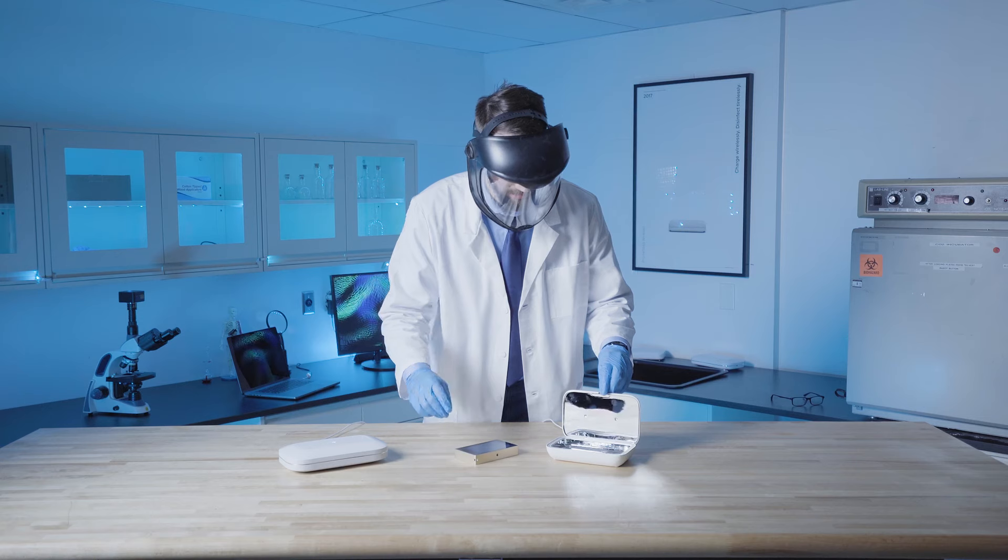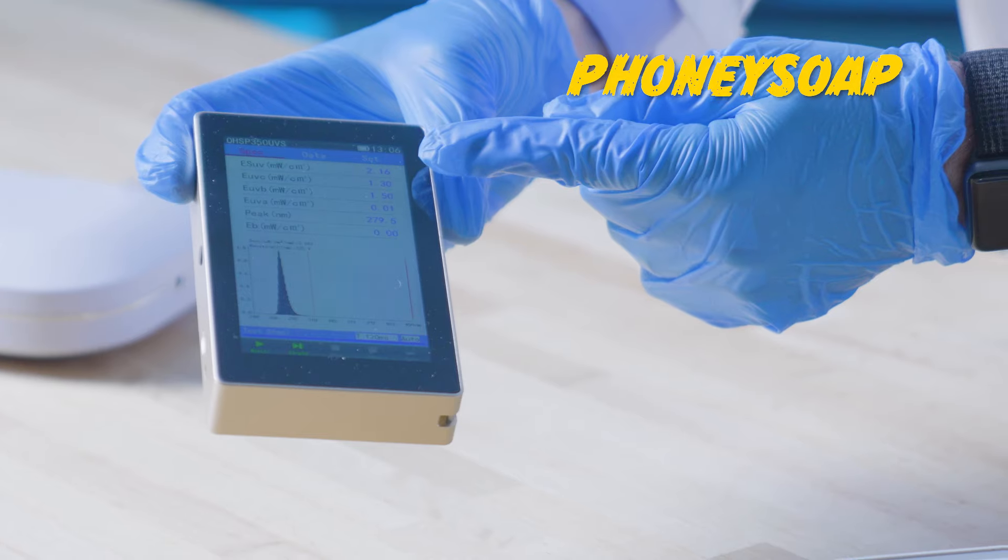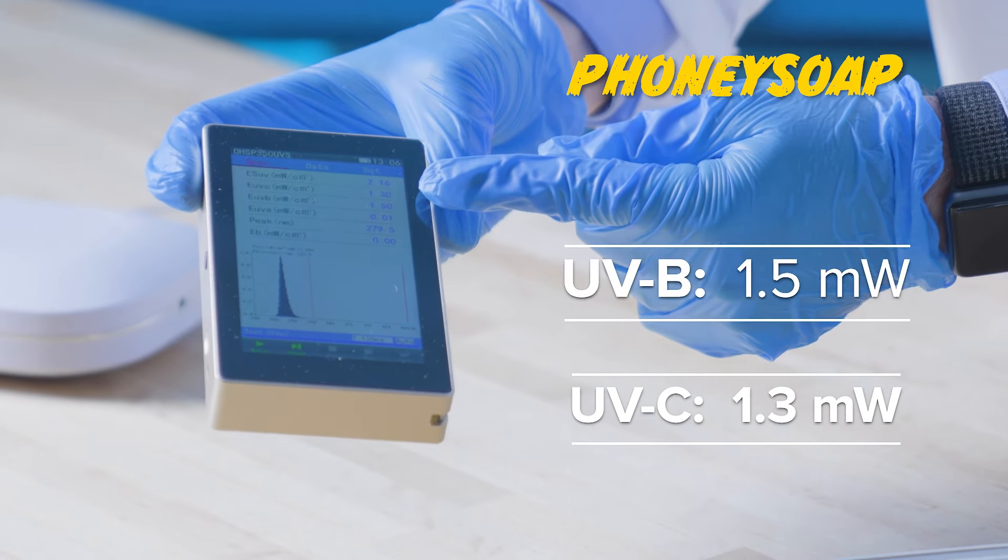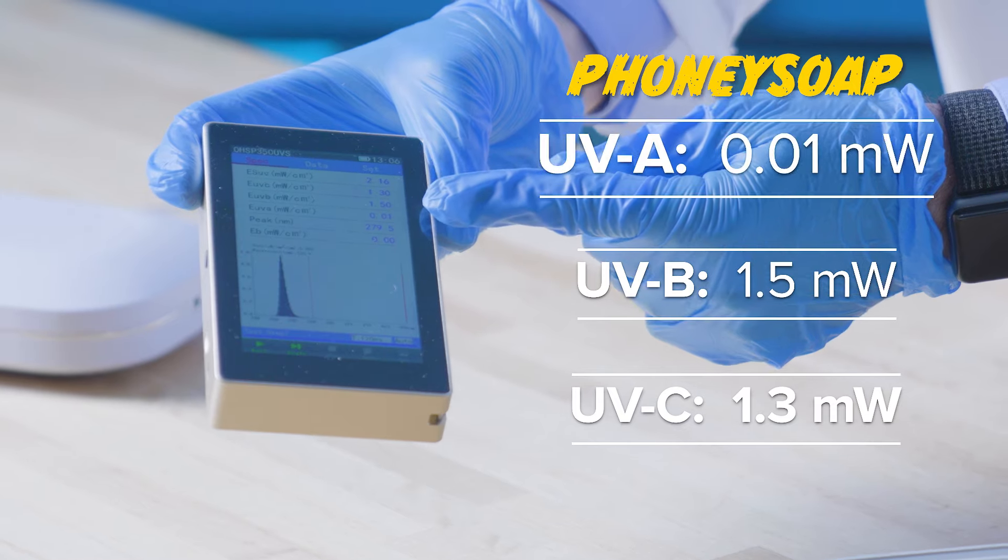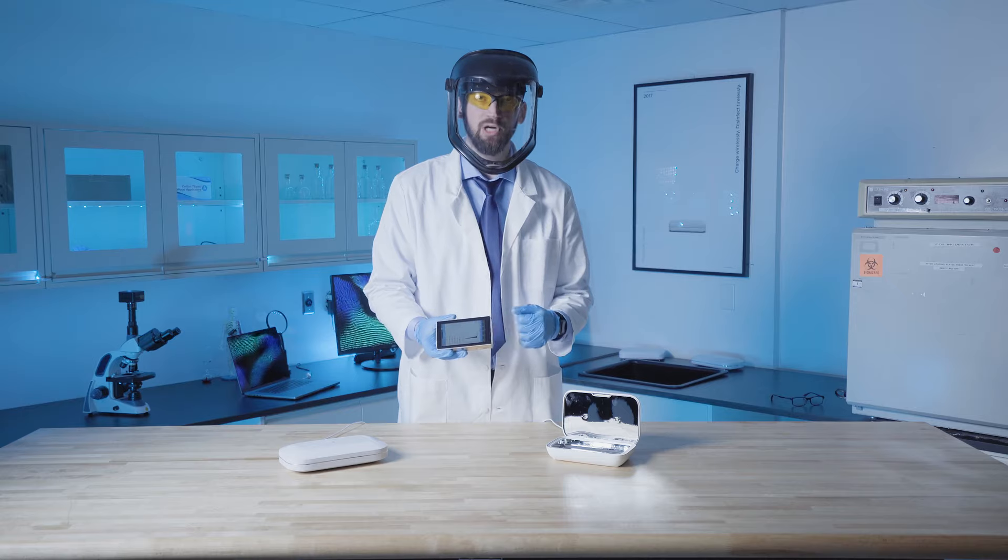So then we'll get this one tested as well. Place it right up against the light. So this one got 1.3 milliwatts on UV-C, 1.5 on UV-B, and 0.01 on UV-A. So that's a good reading. It's within disinfection parameters. But we have one more test.